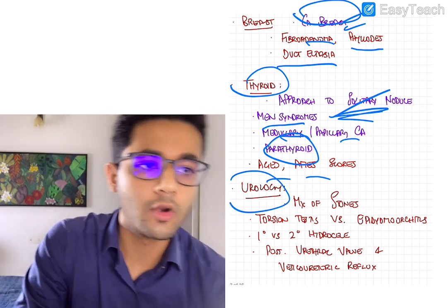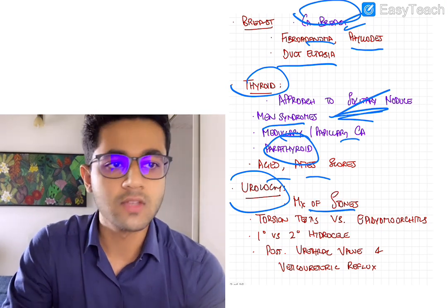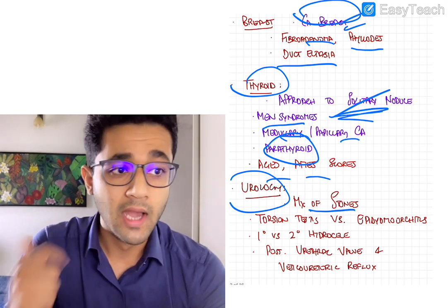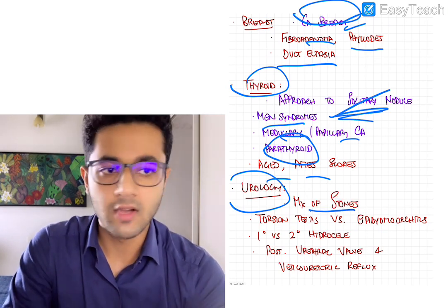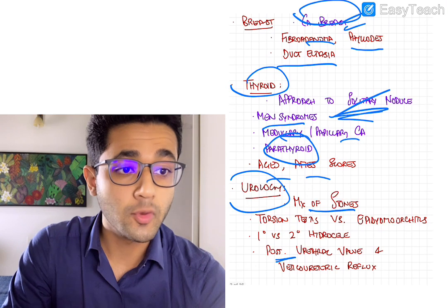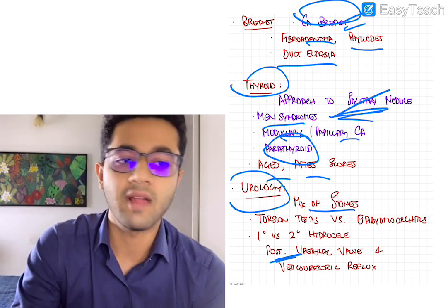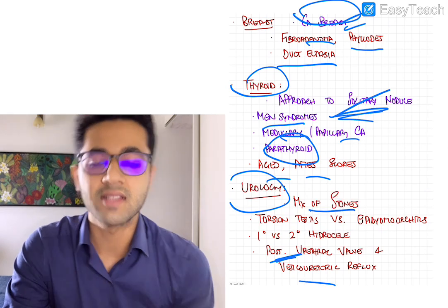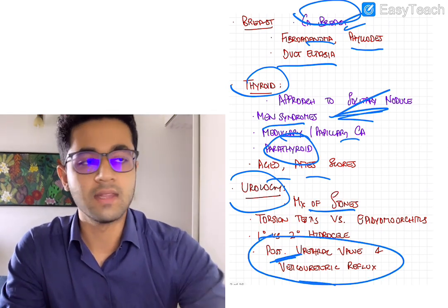Coming to urology, so very few questions are usually asked from urology. So the important topics from urology obviously would include your calculi. So management of renal stones, torsion testis versus epididymo-orchitis, primary versus secondary hydrocele can be asked sometimes. And posterior urethral valve is frequently asked. So posterior urethral valve and also your vesicoureteric reflux is super important.